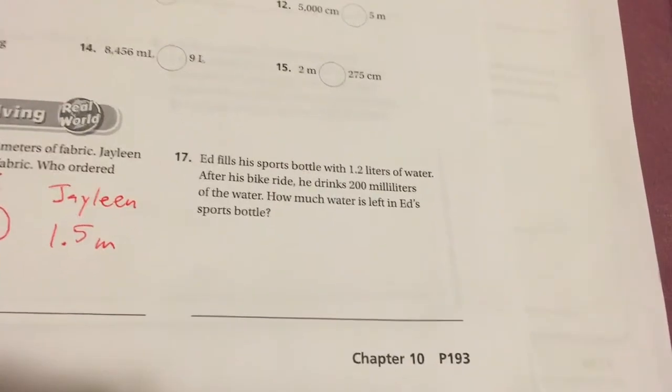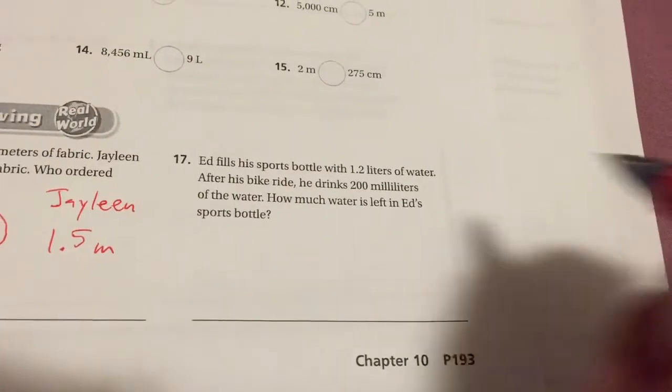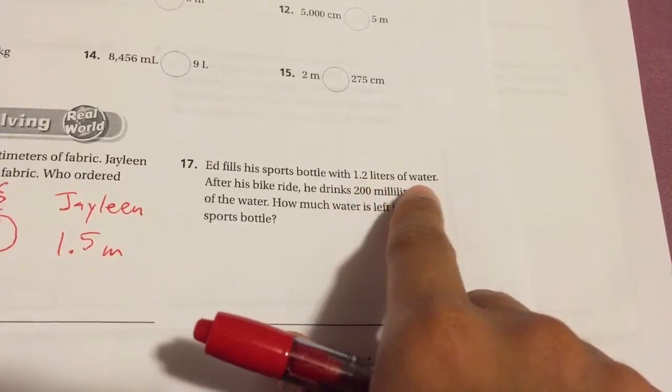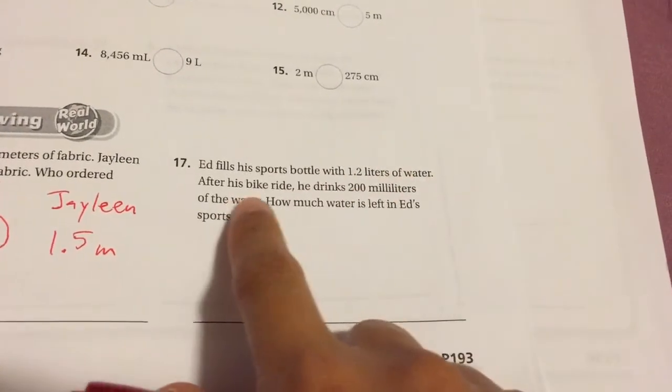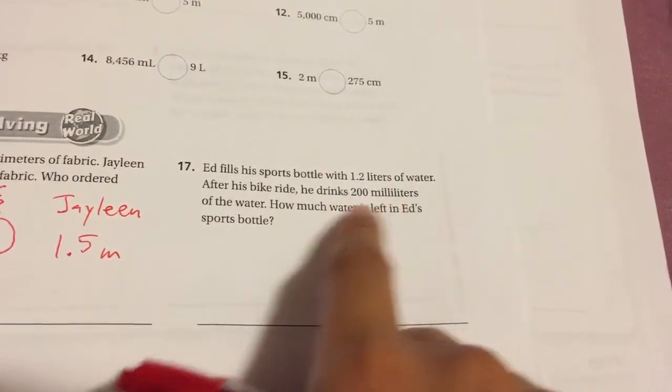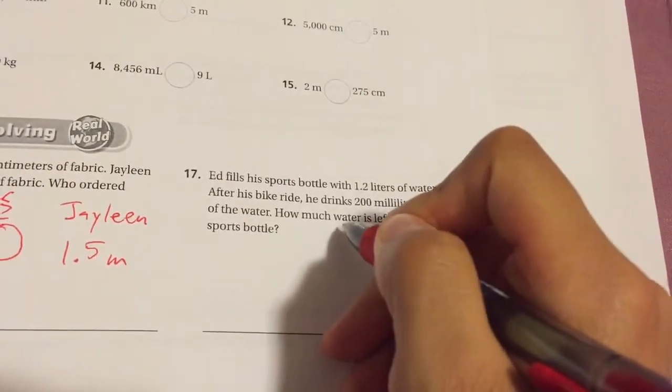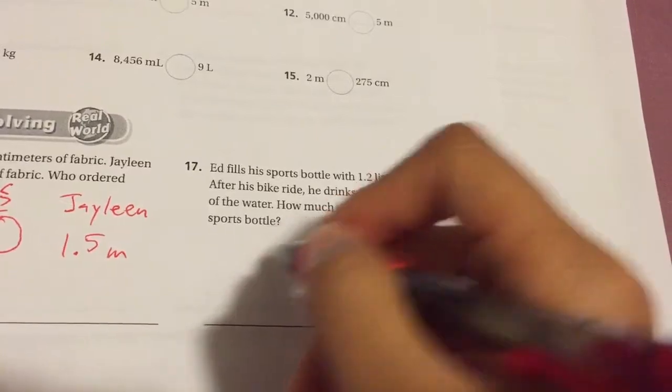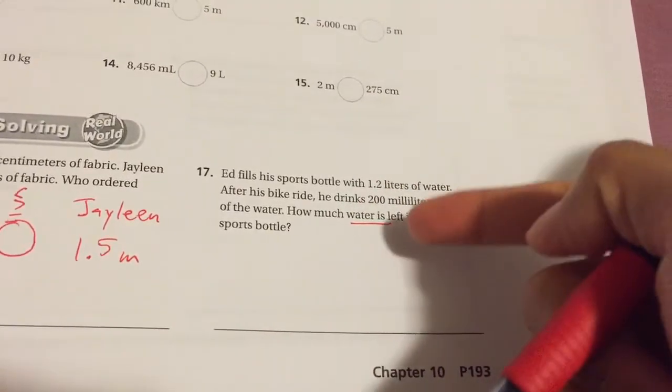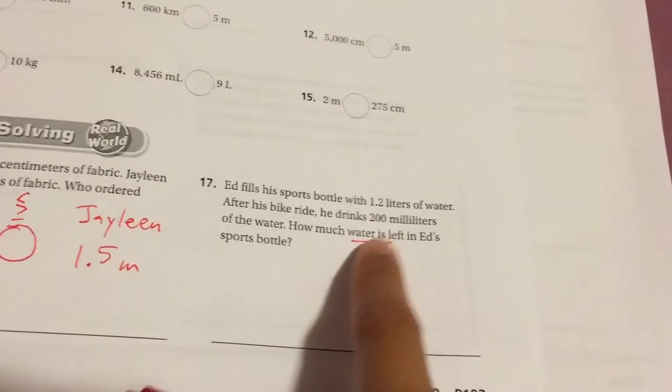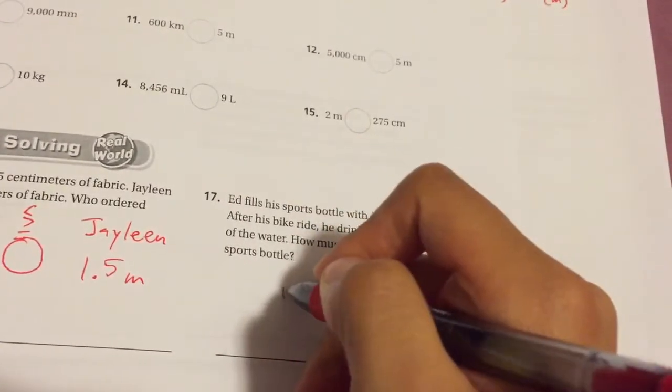I'm also going to get you started with number 17. Ed fills his sports bottle with 1.2 liters of water. After his bike ride, he drinks 200 milliliters of the water. How much water is left in Ed's sports bottle? This one's not a compare and contrast, so it won't look quite like this. Since you're trying to figure something out, you're going to use a picture box.